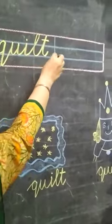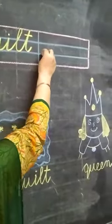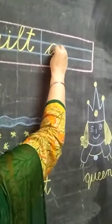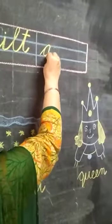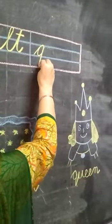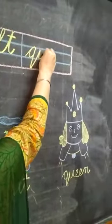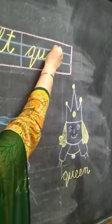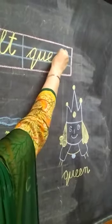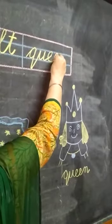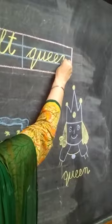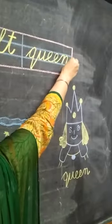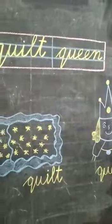Next repetition word is Queen. Q, U, E — E will come in the two middle lines. E, N. Queen.